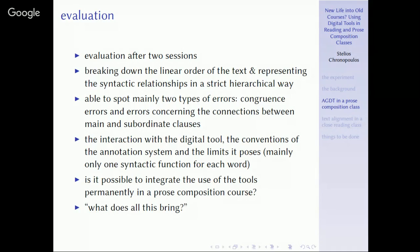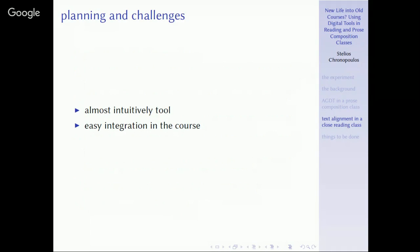Now we are going to the second example, the second experiment, the use of the text alignment course in a close reading class. Since the Perseids tool that I showed you in a glimpse, and we will see now in detail, for text alignment can be used almost intuitively, its integration in the course was actually very, very easy. It was a course where we read, as I told at the beginning, a very difficult text, Plato's Politicus.